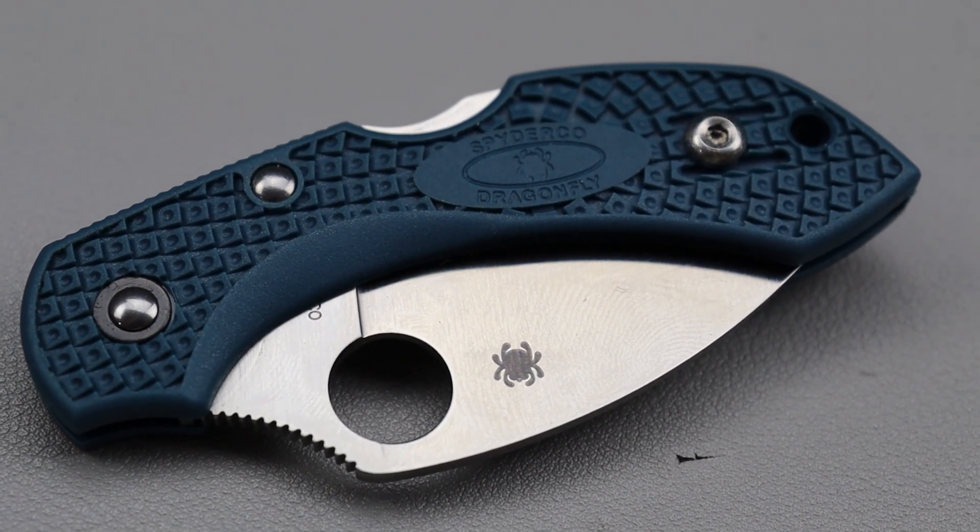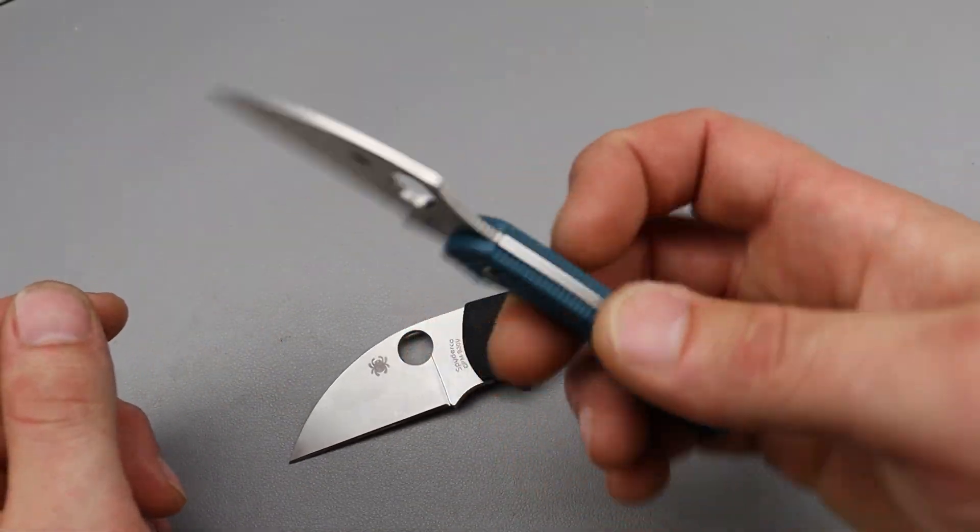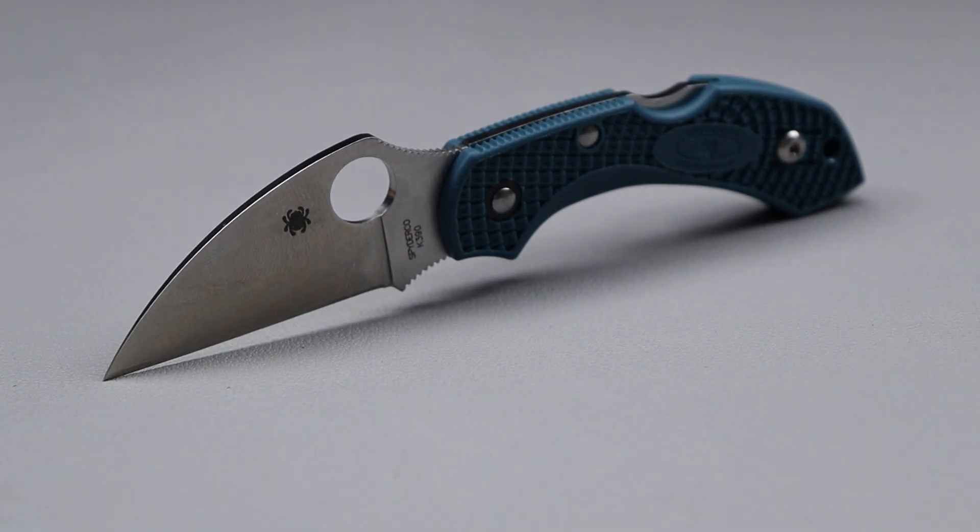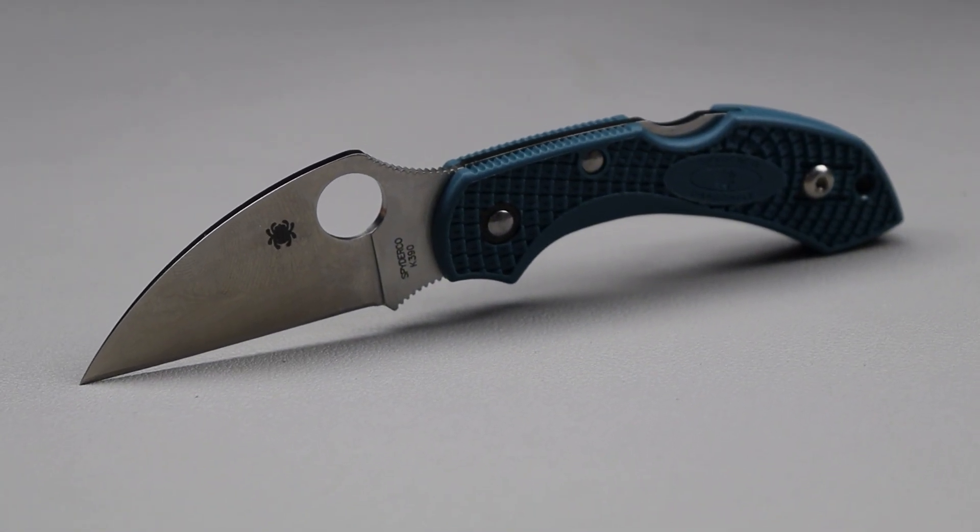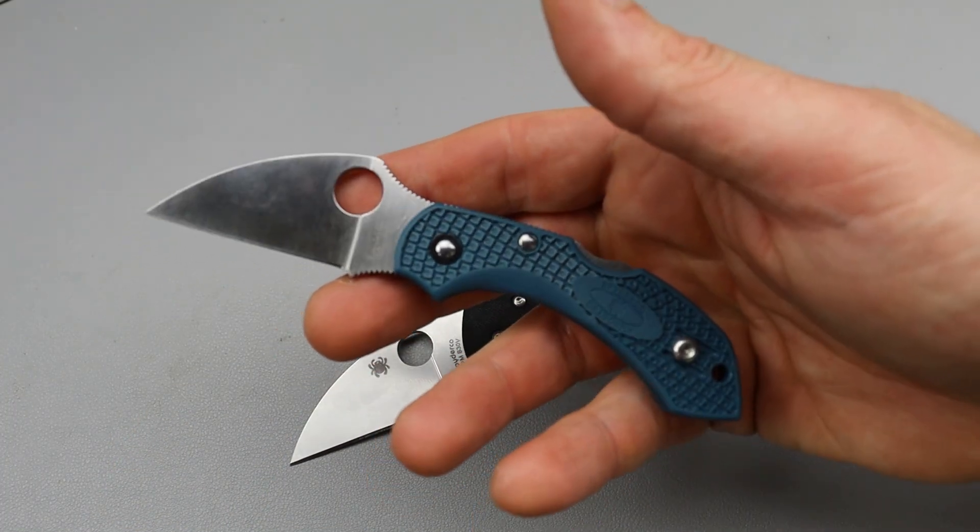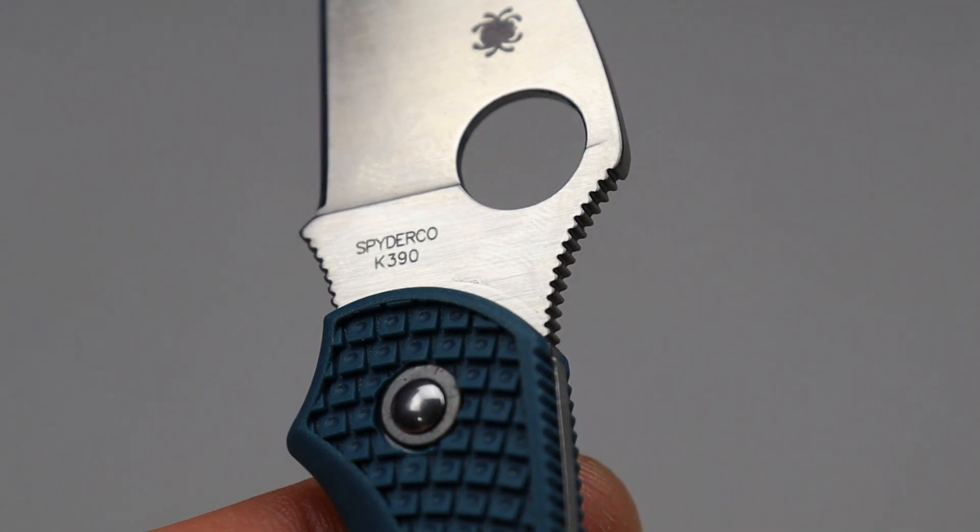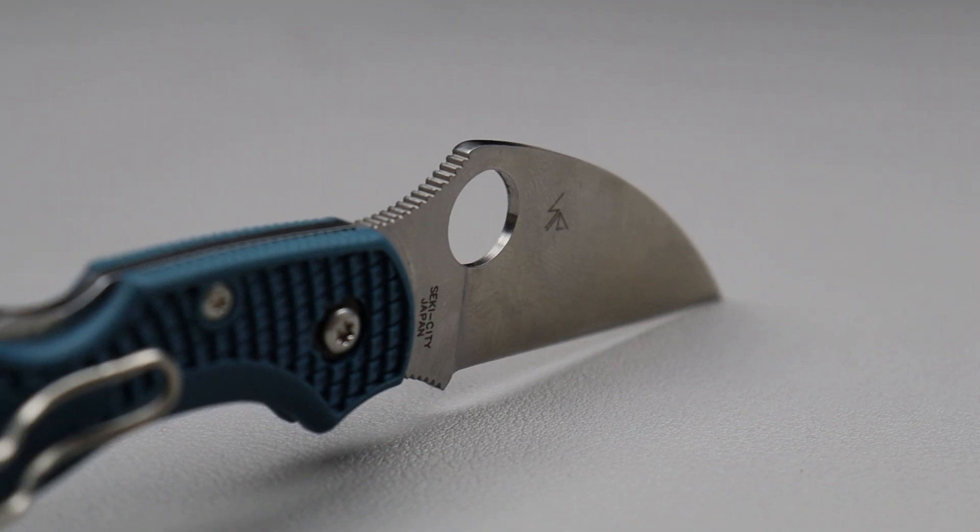The Dragonfly is in FRN and it is very lightweight. This is a great knife if you're looking for something super compact and small in a super steel. There are other versions and other steels but I highly recommend this one if you're going to get it in K390. This is an absolute super steel.